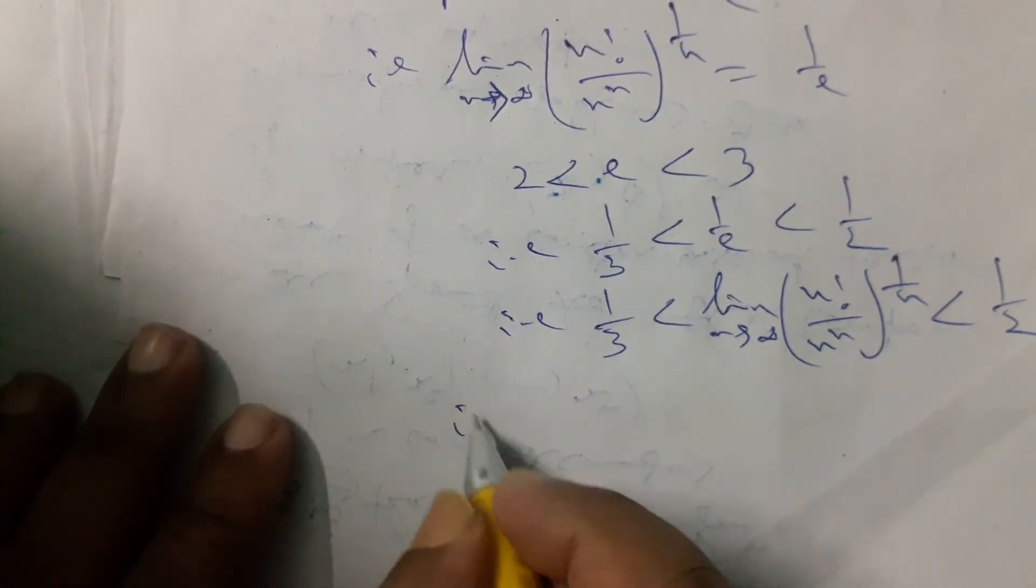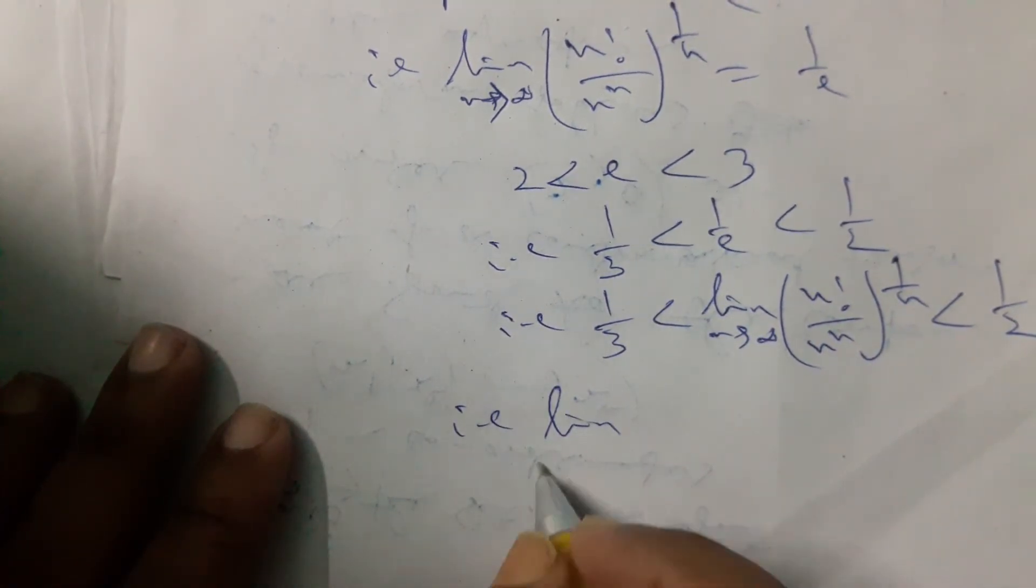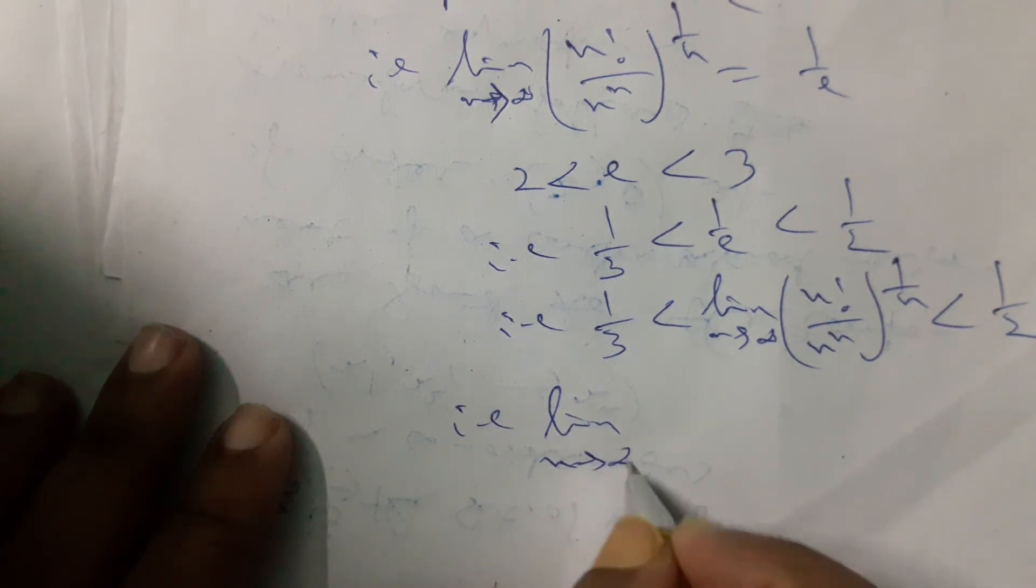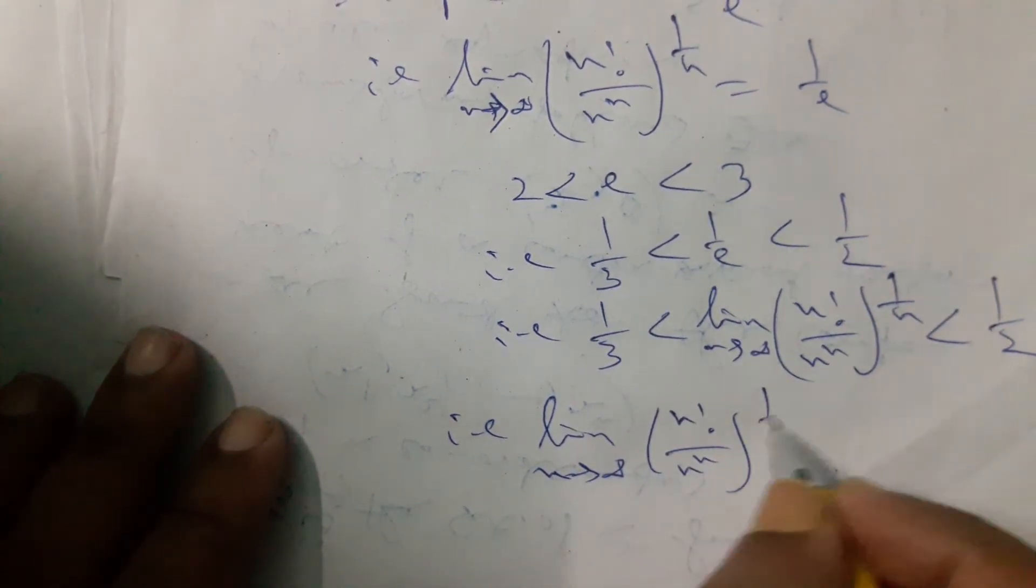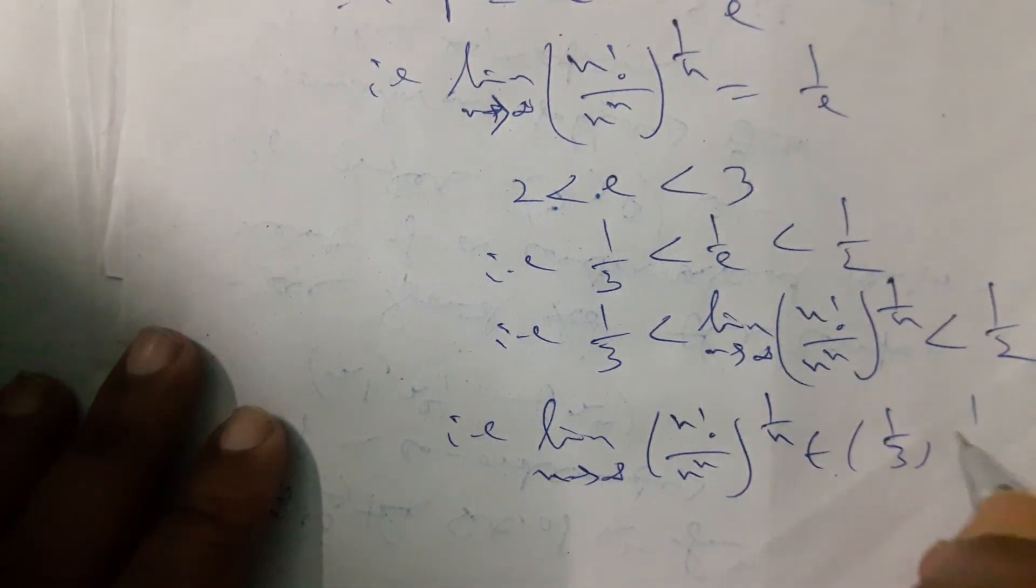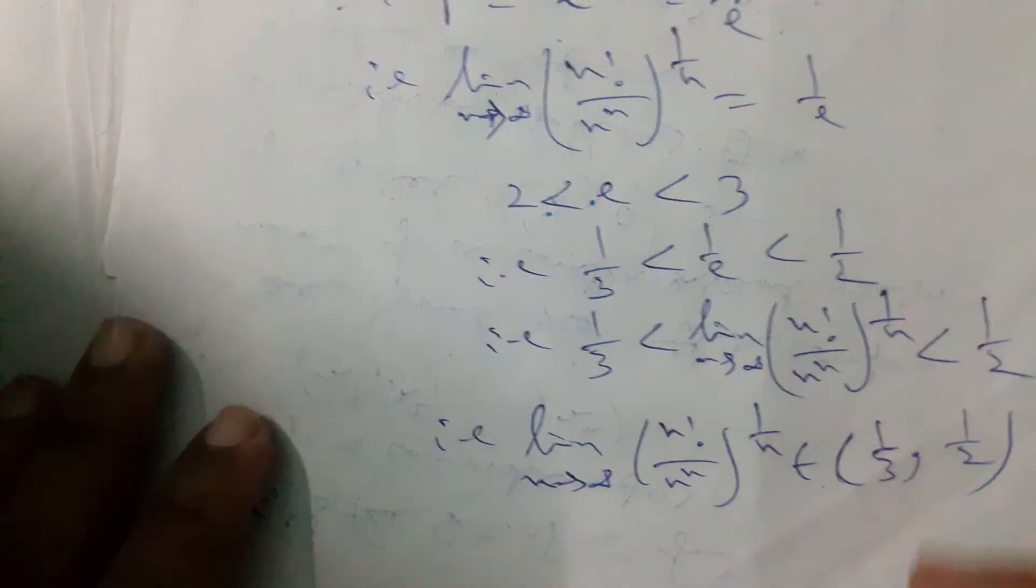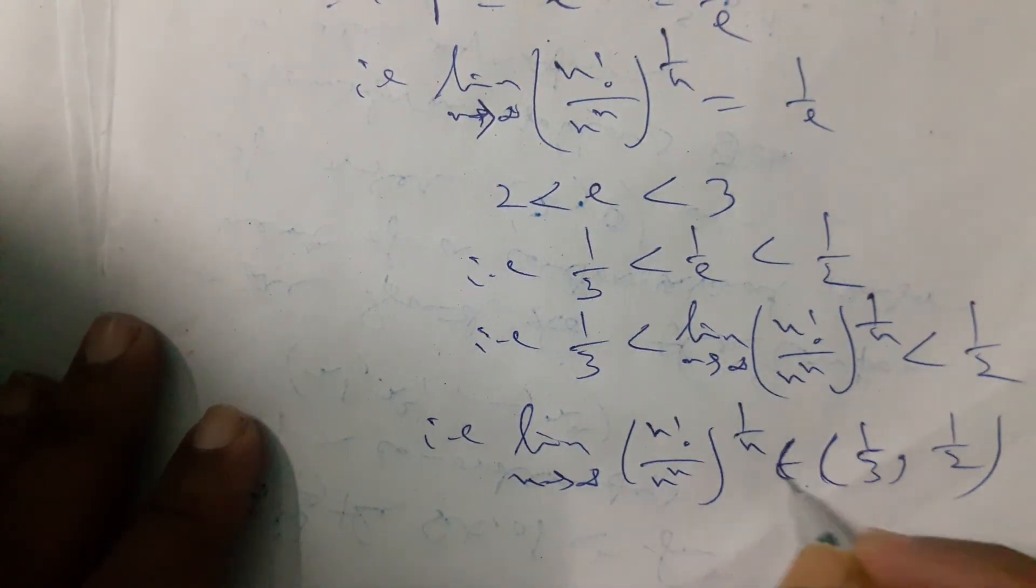Which indicates limit as n tends to infinity, n factorial by n to the power n, whole to the power 1 by n, belongs to the open interval 1 by 3, 1 by 2. That is called open interval.